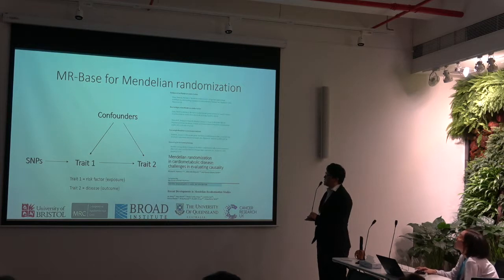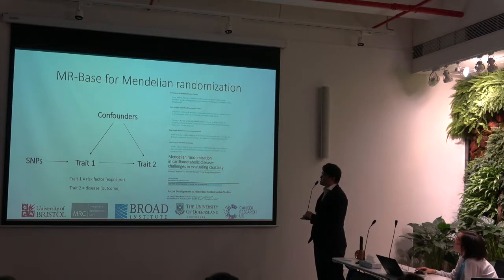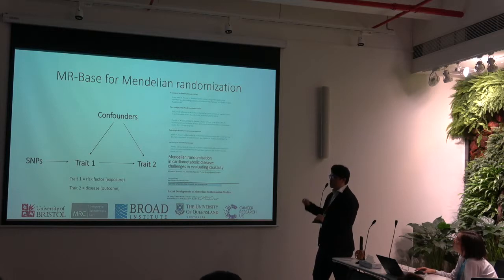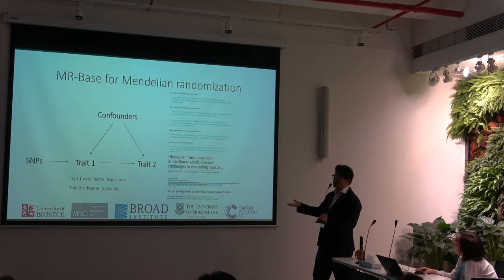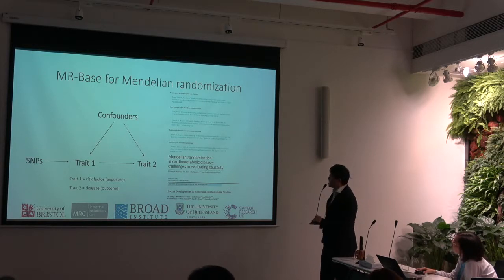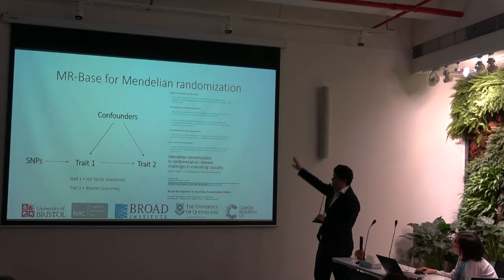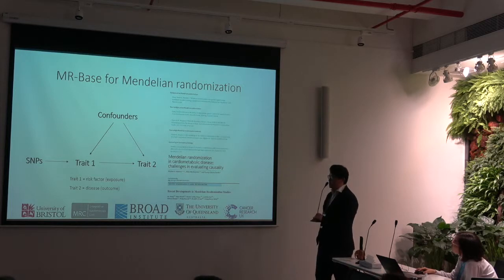We also have a GWAS summary data sharing center, which shares all GWAS summary results with the community. The second tool is called MRBase, which is for Mendelian randomization. As you may know, Mendelian randomization uses SNPs — genetic variants — to instrument the causal effect of one trait on another. Trait one is normally a risk factor like smoking or physical activity, and trait two is normally a disease, such as cancer. I list some literature here, especially a nice review paper in Nature Reviews Cardiology by Michael Davey Smith.